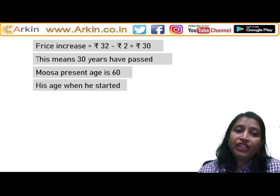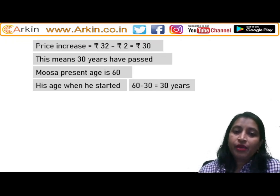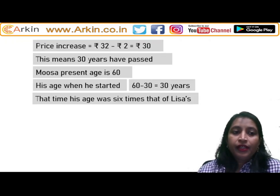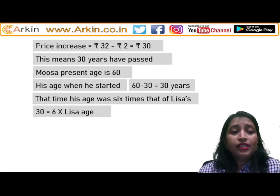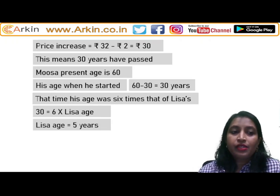Musa's present age is 60, and 30 years have passed, so he was 30 years old when he started. At that time, his age was 6 times that of Lisa's — so 30 equals 6 times Lisa's age, meaning Lisa was 5 years old at that time.